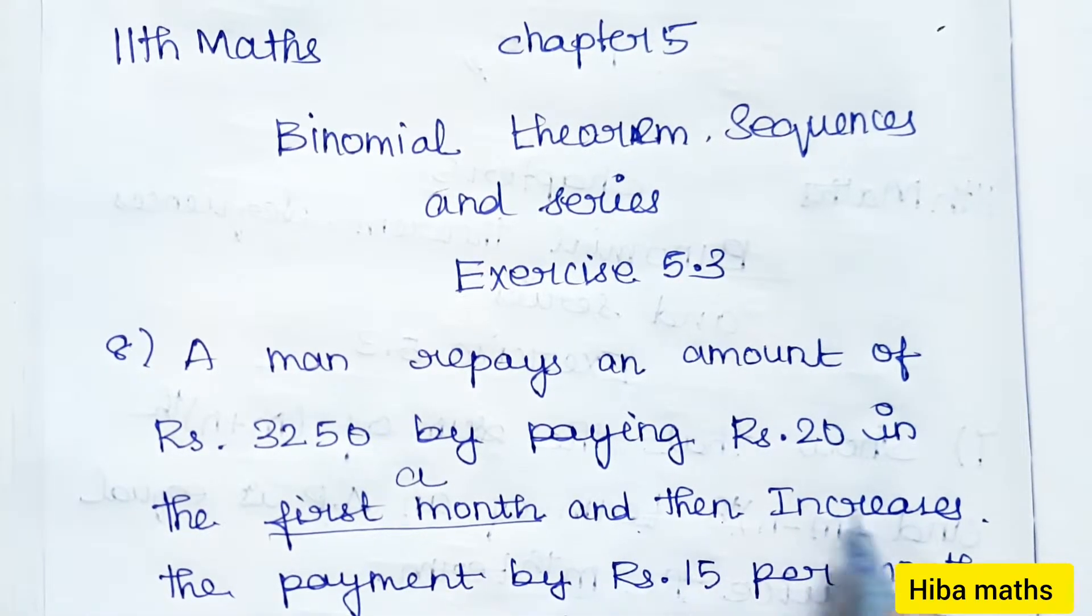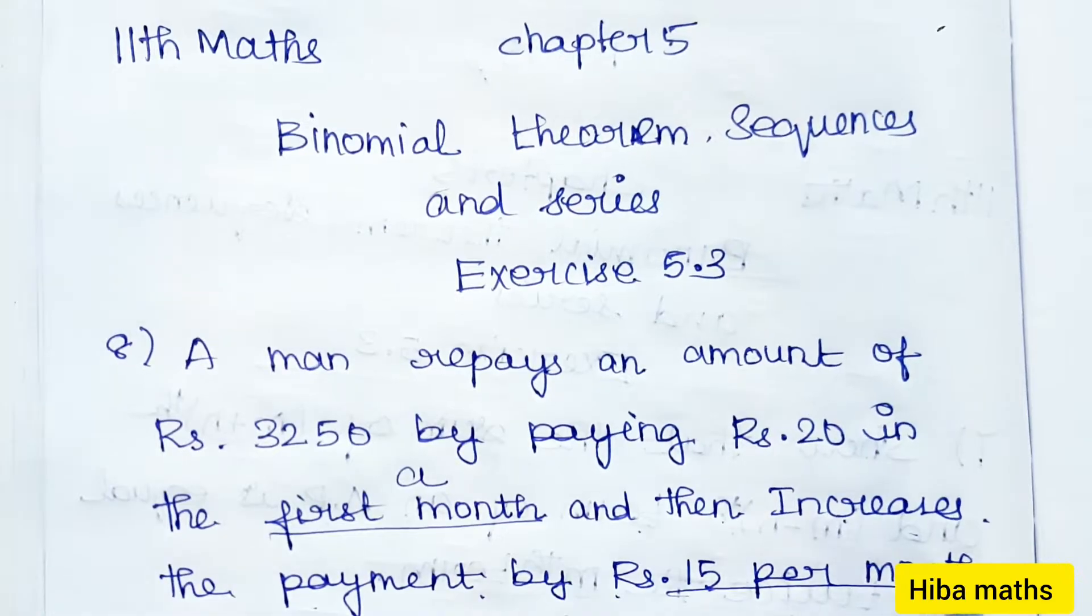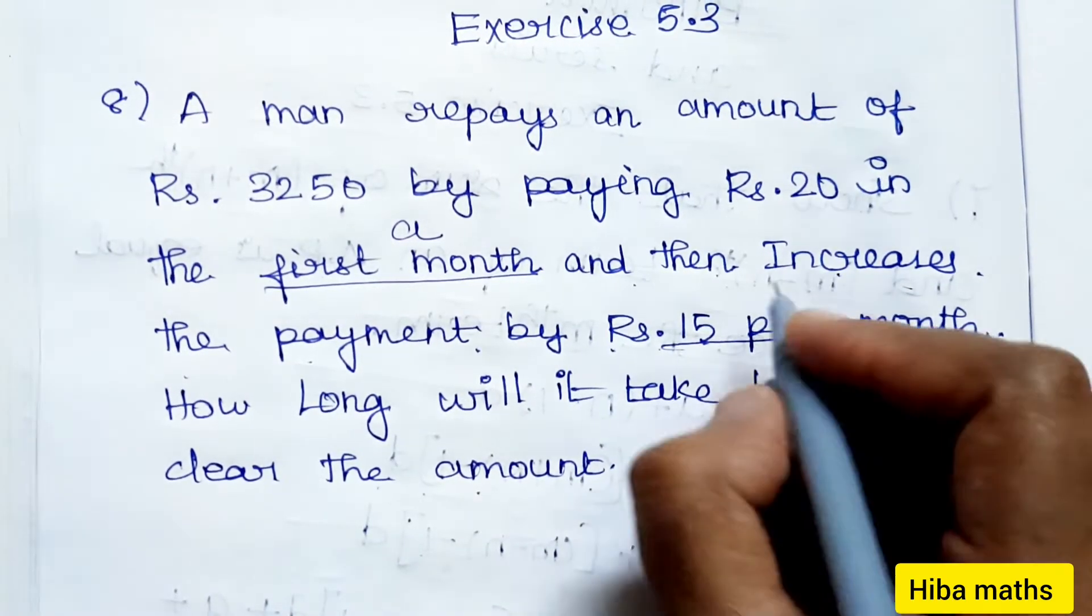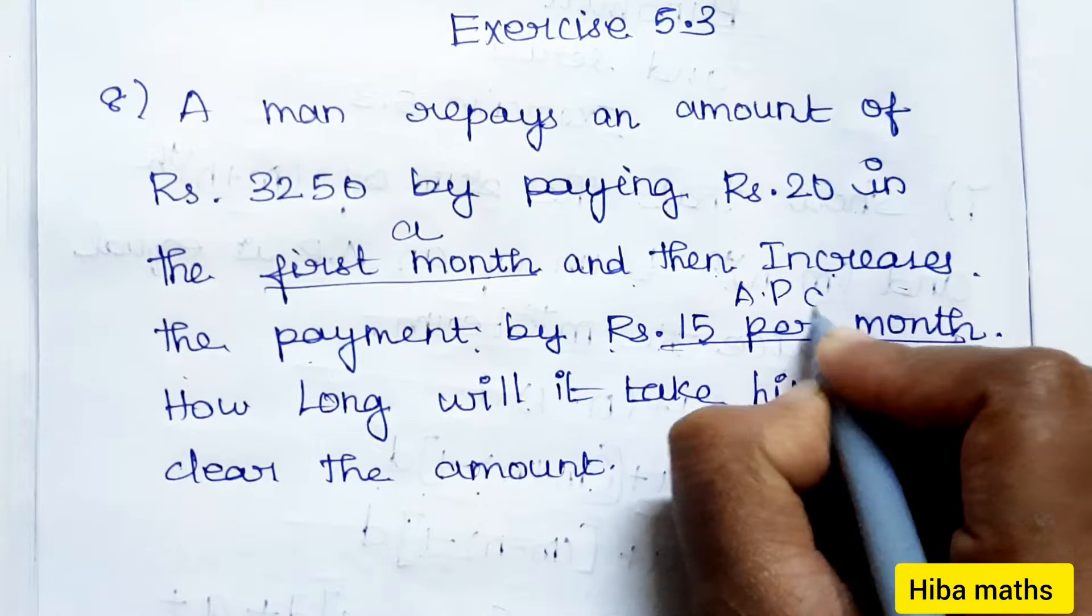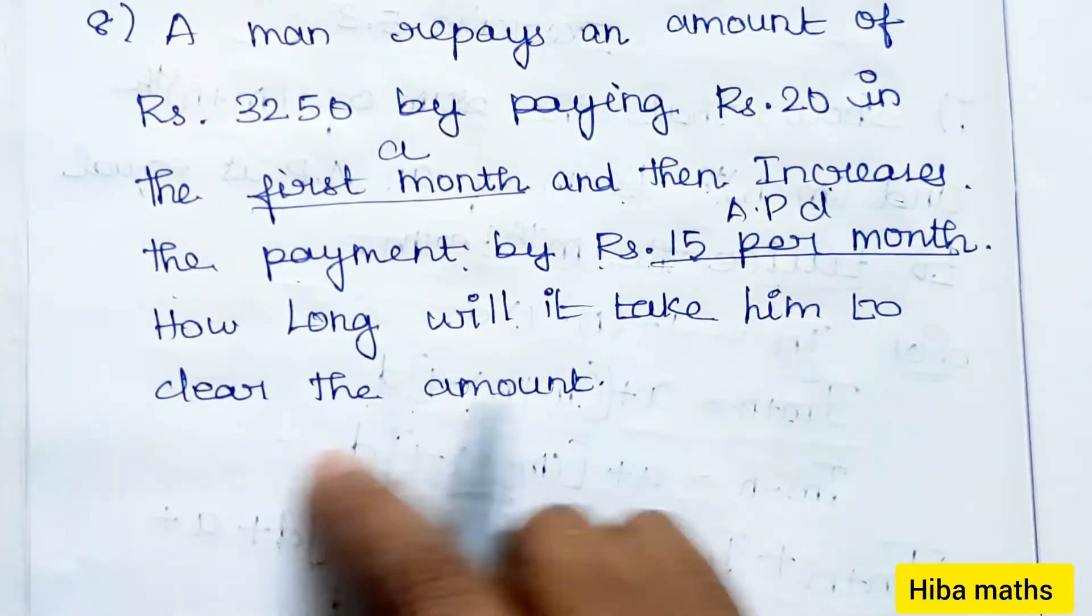In the first month he pays 20, and then increases the payment by rupees 15 per month. So each month the payment increases by 15. This forms an arithmetic progression with a = 20 and d = 15.